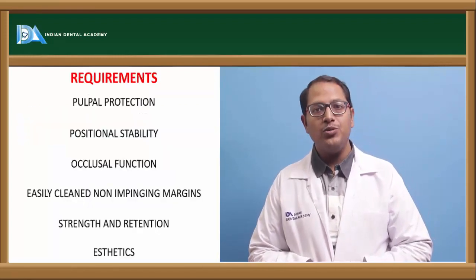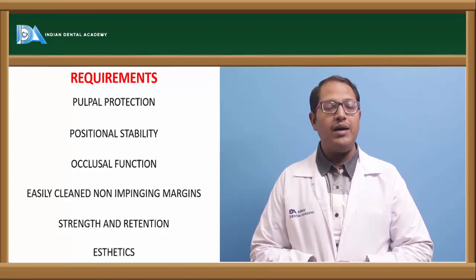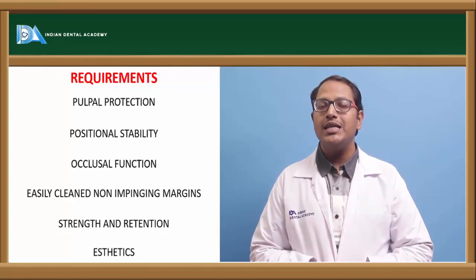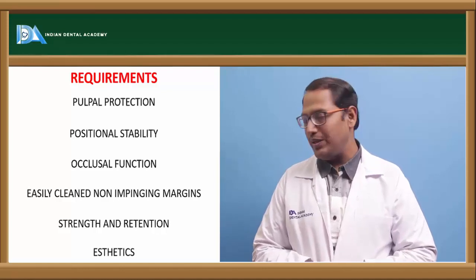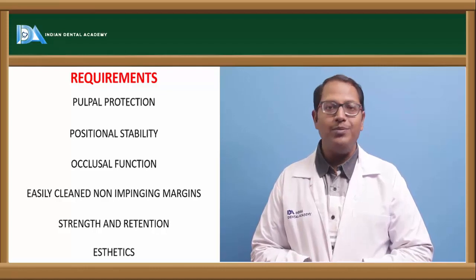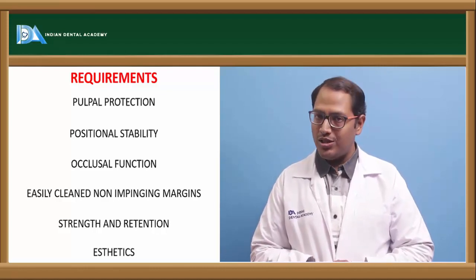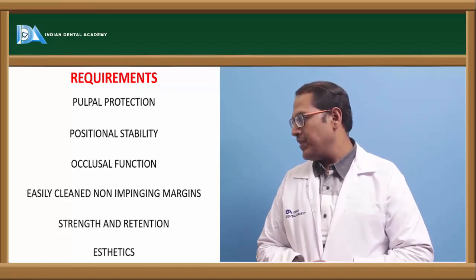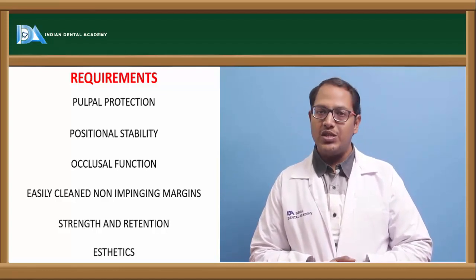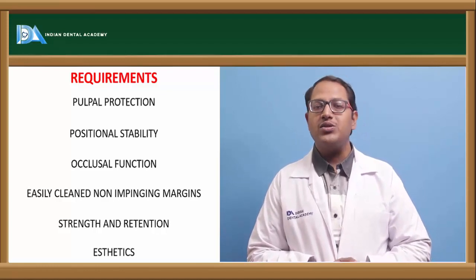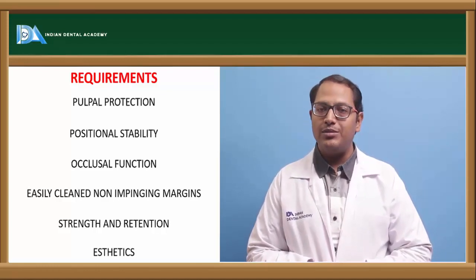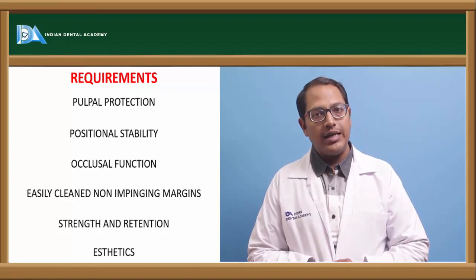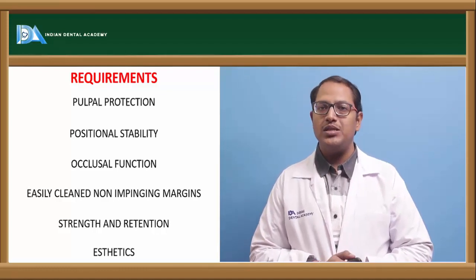So the requirements remain the same. It should protect the pulp — foremost — because in a vital tooth preparation we have exposed the dentine, and it should not cause any sensitivity to the patient if left open. Positional stability should be maintained. It should not be a material that breaks when occlusal load comes over it. It should be easily cleansable and should not impinge on the gingiva. The strength and retention of the provisional restoration should be fair enough. Good bond strength should be there and it should be able to take up the occlusal load. Aesthetics of course — it should be pleasing with tooth-colored acrylic or other shades managed accordingly.